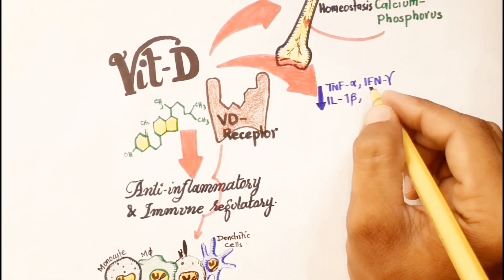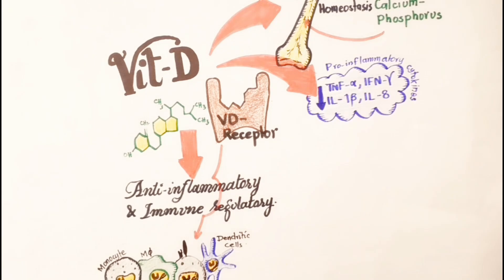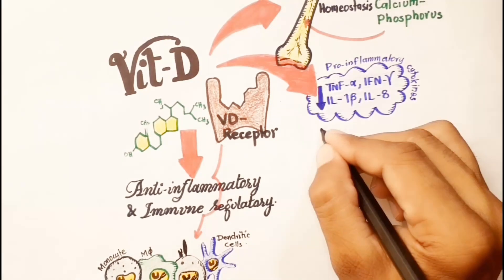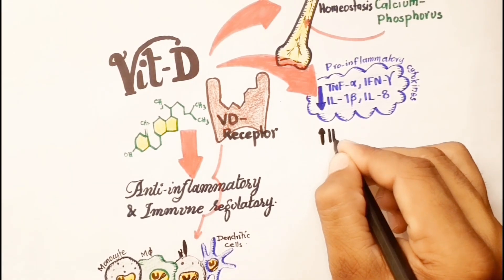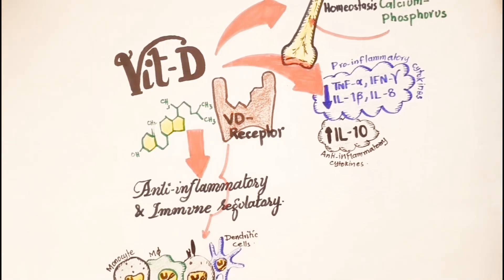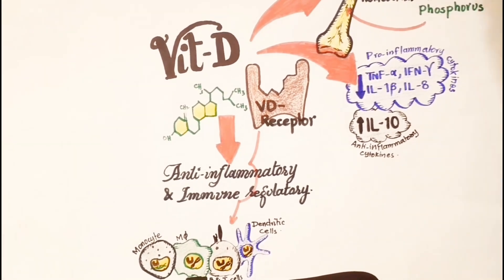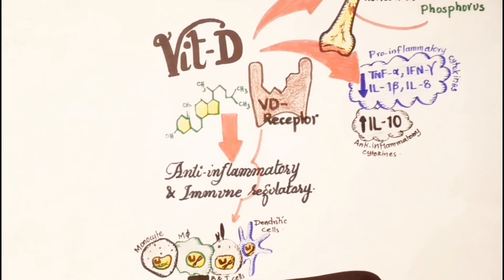It also increases the level of anti-inflammatory cytokines like interleukin-10. Hence, vitamin D can modulate both innate and adaptive immune responses.